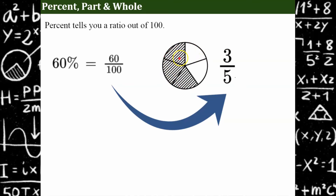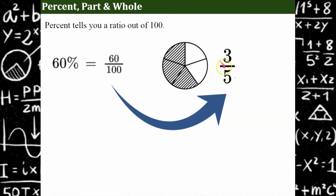So if we look at this circle, it is divided into five sections, with 5 being the whole. The entire circle is represented by five sections. The part is three of them are shaded. So 3 fifths of this circle is shaded. And 3 fifths is equivalent to 60%, so we can say that 60% of the circle is shaded. We have an equivalent ratio here: 60 out of 100 equals 3 out of 5.